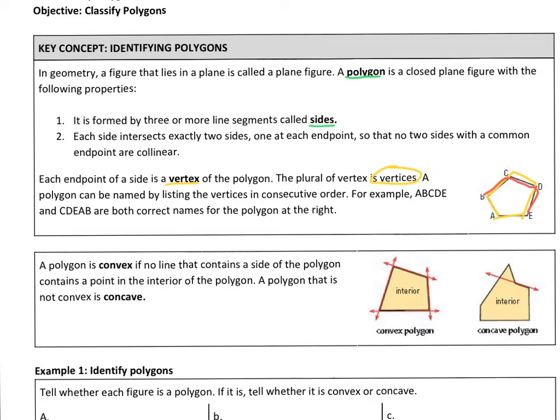So those are acceptable, but as long as you have those vertices in order as you're following it, that's the important part of naming a polygon. Make sure you're naming those vertices in the correct order.